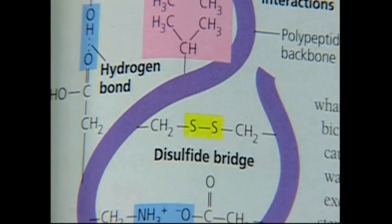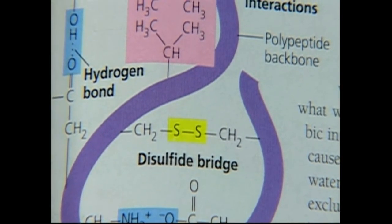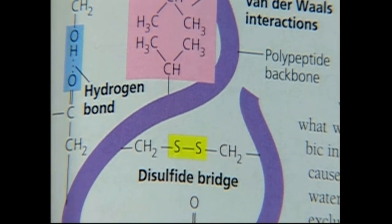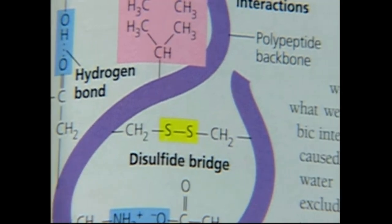Here's the disulfide. This is used in your hair. You gals that get perms, something about breaking the disulfide bonds. Well, there's that sulfur hanging off. There's only two amino acids with the sulfurs.